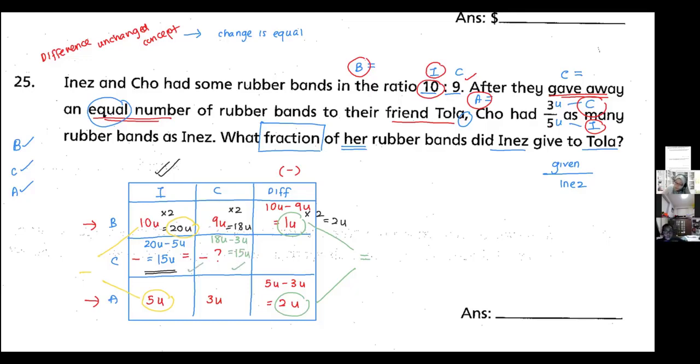So we know that the given is 15 units and Inez had a total of 20 units at first. So it's 15 over 20. Then when you divide by 5, you get 3 out of 4. That is the answer.